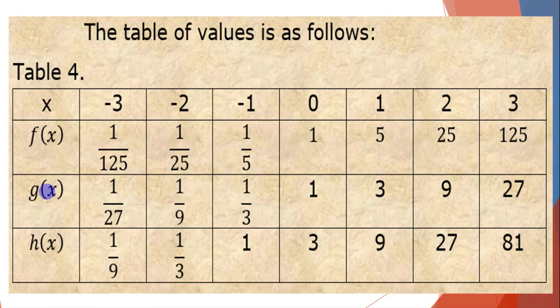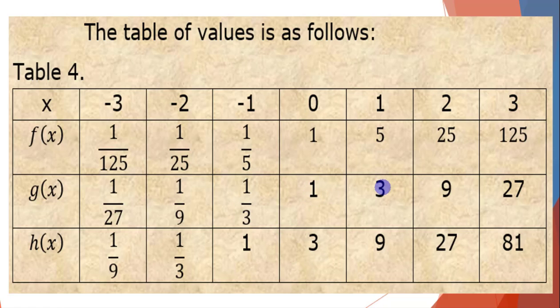For g(x) = 3 raised to x: 3⁻³ = 1/27, 3⁻² = 1/9, 3⁻¹ = 1/3, 3⁰ = 1, 3¹ = 3, 3² = 9, 3³ = 27.